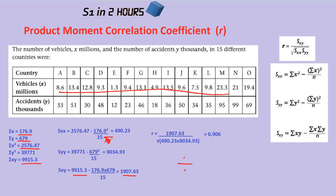The more vehicles there are, the more accidents there'll be on the road. If this were a negative number, say negative 0.6, that would be negatively correlated — meaning the more vehicles there are, the fewer accidents, which wouldn't really make sense. If R is nearing 1 and positive, that's strongly positively correlated. If it's very low, almost at 0, there's no correlation. And if it's negative, around 0.6 or 0.7, that would be negatively correlated.